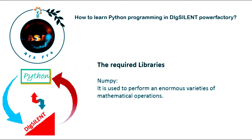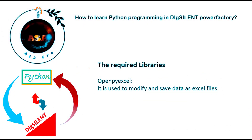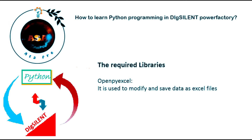The next library that we will use is OpenPyXL. It is a Python library which is used for reading and writing Excel files with different extensions. In this tutorial we will use it to modify and save the data and results obtained from a network system in DIgSILENT PowerFactory as an Excel file.